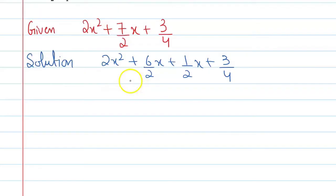In both of these, what is common is 2x, you can take that common. You can say 2x, and this will become x plus 3 by 2, plus you can take 1 by 2 common from here.